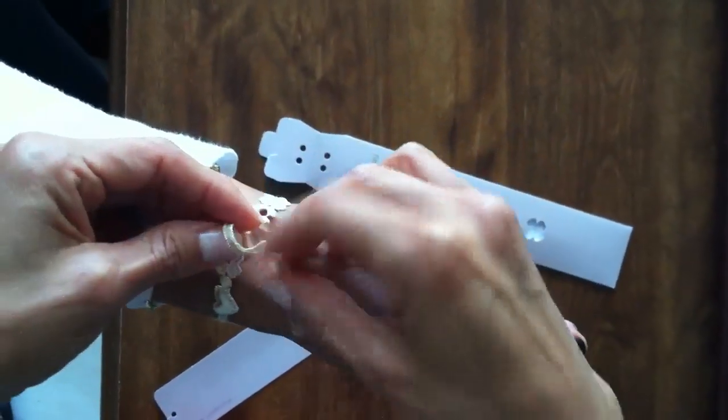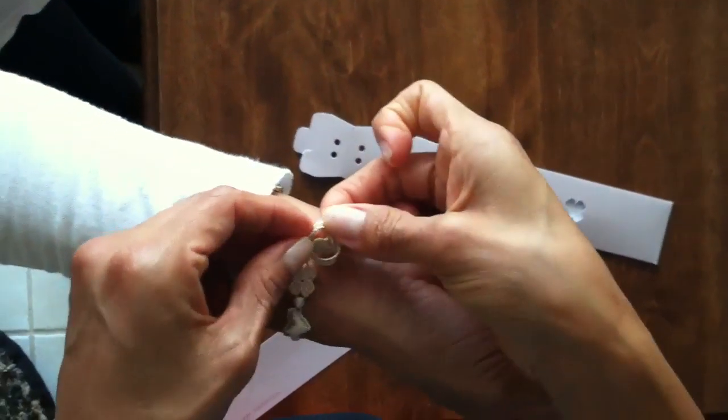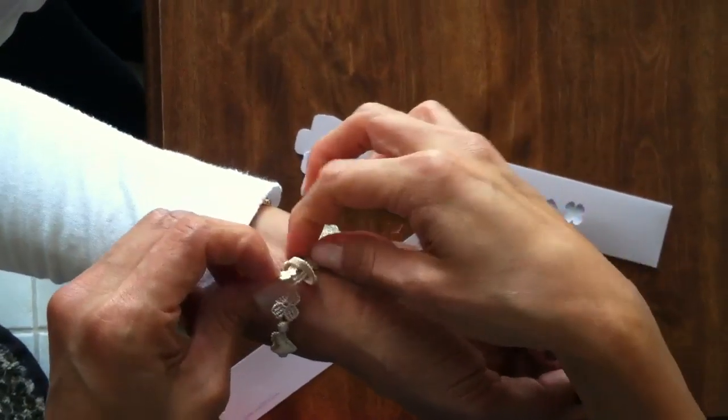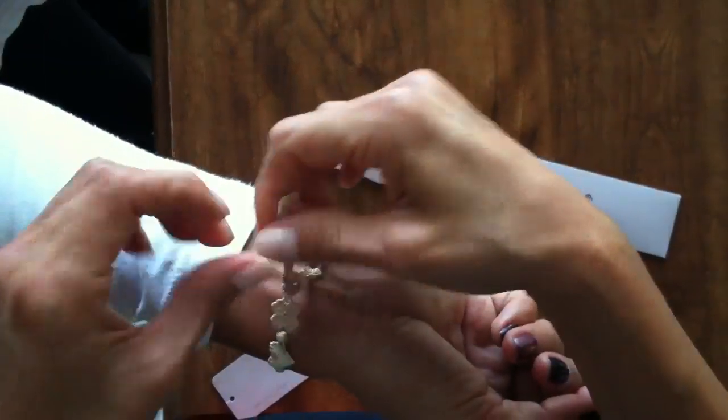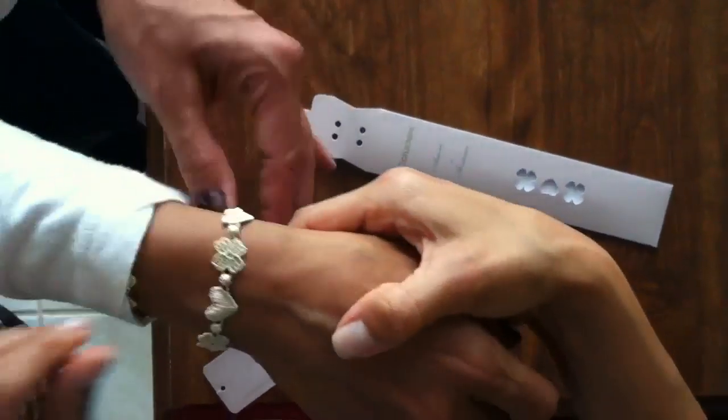You're just going to put it through here, and then do that little loop again, and you're going to knot it. There you go, simple as that.